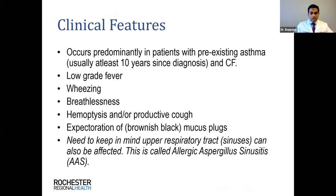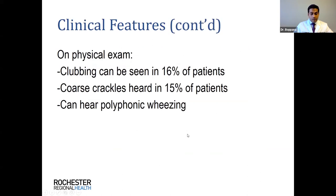Clinical features are mostly nonspecific but include low-grade fevers, wheezing, breathlessness, hemoptysis, and productive cough. Classic for ABPA is expectoration of mucous plugs. The upper respiratory tract and sinuses can also be affected, and sometimes this can precede development of ABPA. On physical exam, about 15% of patients can have clubbing and coarse crackles, and polyphonic wheezing may be heard.